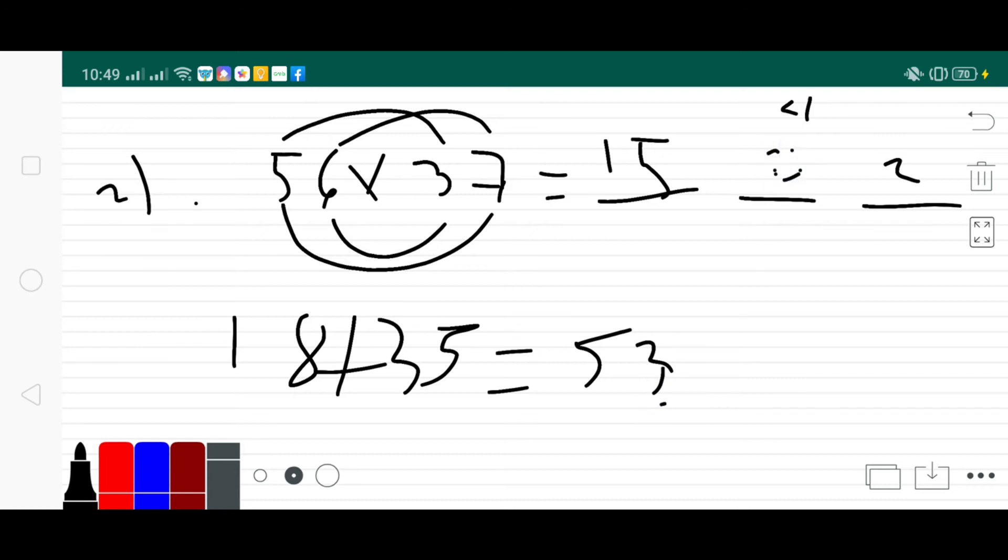So this number 53 is the answer for the middle line. So 3, carry 5. So the final answer there is 72. So it's 2072. 5 plus 5 is 10, and carry 1. So 1 plus 1 is 2, so it's 2072.